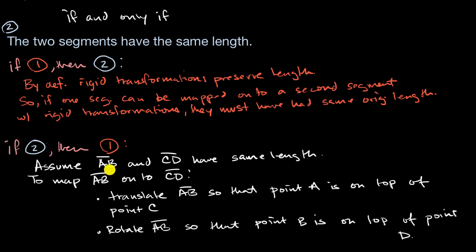And there you have it. For any two segments with the same length, I can always translate it so that I have one set of points overlap. And then to get the other points to overlap, I just have to rotate it. And I know that's going to work because they have the same length.